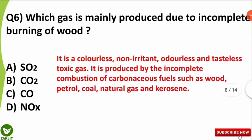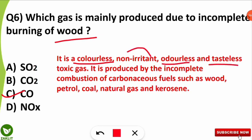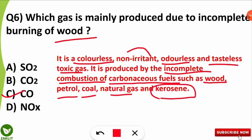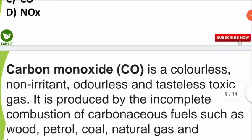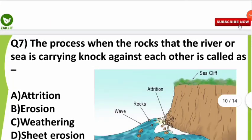The sixth question was: which gas is mainly produced due to incomplete burning of fuel? Incomplete combustion produces the harmful gas carbon monoxide. It is a colorless, non-irritant, odorless, and tasteless toxic gas produced by the incomplete combustion of carbonaceous fuels such as wood, petrol, coal, natural gas, and kerosene.